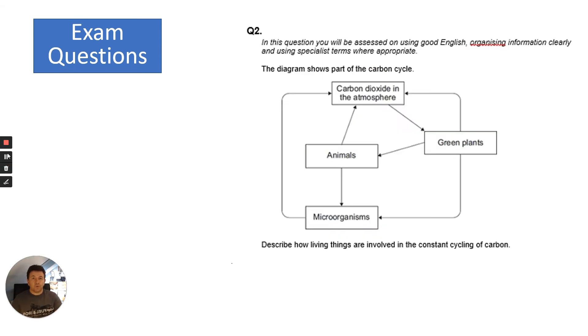This is a six-mark question. It shows you diagrams of parts of the carbon cycle. Notice it's different to the diagram I showed you earlier - they can show you lots of different diagrams related to the carbon cycle, but they're pretty much the same kind of processes. It says describe how living things are involved in the constant cycling of carbon. Describe just means to say what you know, you don't have to explain why. I would like you to pause and have a go on a piece of paper, then you can use a green pen to make your improvements.